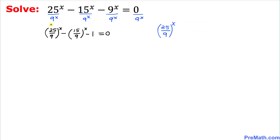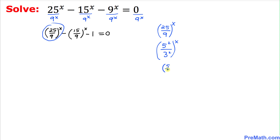Now let's focus on the first term. We can simplify it: 25 can be written as 5 squared, and 9 in the denominator can be written as 3 squared, all raised to the power x. Inside the parentheses, this becomes (5/3)² raised to the power x.